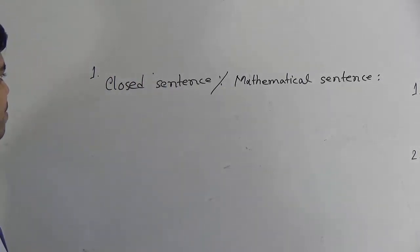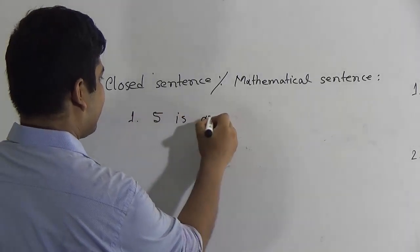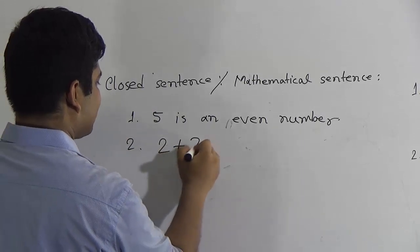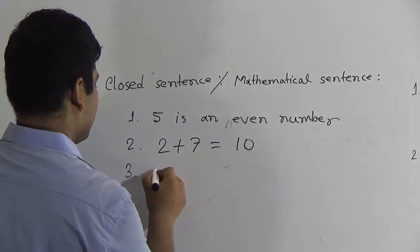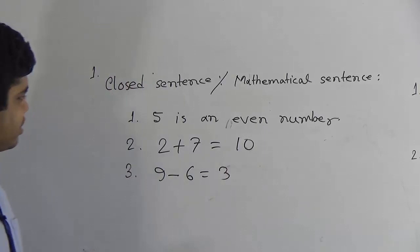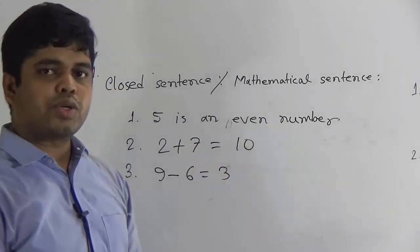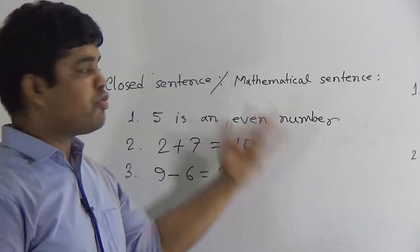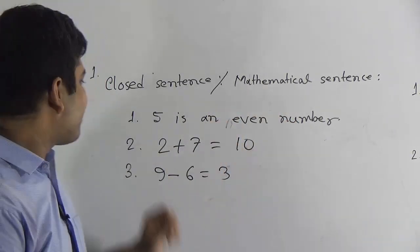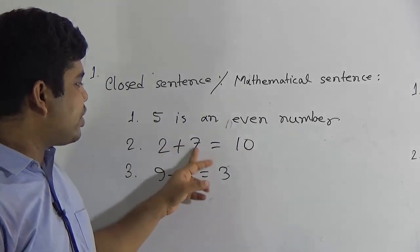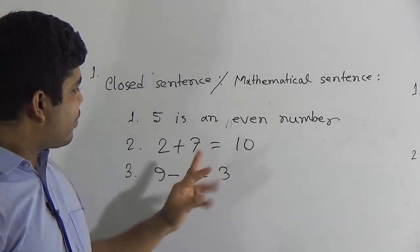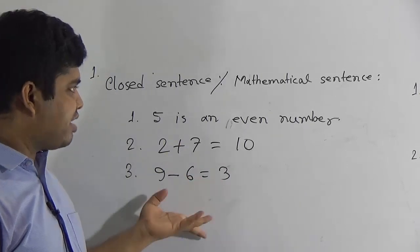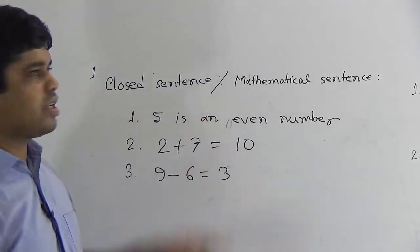My dear students, I give you 2 examples. Notice: '5 is an even number.' On the other hand, '2 plus 7 equal to 10.' And '9 minus 6 equal to 3.' Now, '5 is an even number' — is it true or false? It must be false because 5 is an odd number. We can determine it is false, so we call this a closed sentence or mathematical sentence. '2 plus 7': if we add 2 and 7 we get 9, but here is 10, so it is also false — it is a mathematical sentence. '9 minus 6 equal to 3' is true, and we can determine it, so it is also a mathematical sentence or closed sentence.